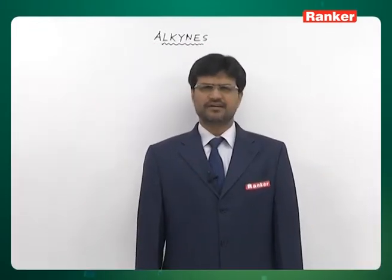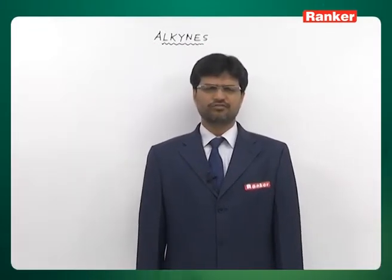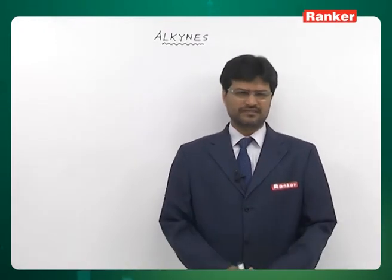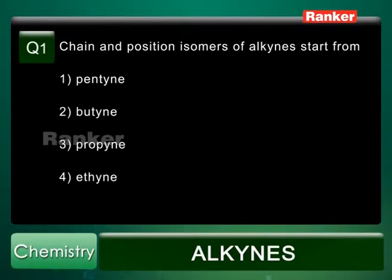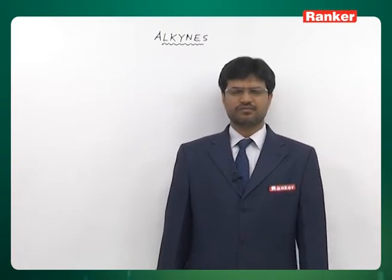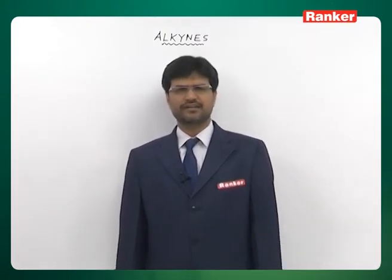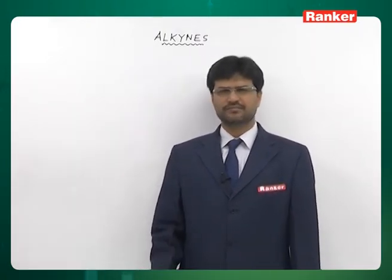The topic of discussion is alkynes. Let us do some multiple choice questions based on alkynes. Question number one: chain and position isomers of alkynes start from — first option pentyne, second option butyne, third option propyne, and fourth option is ethyne. We have to find out from which alkyne chain and position isomerism start.